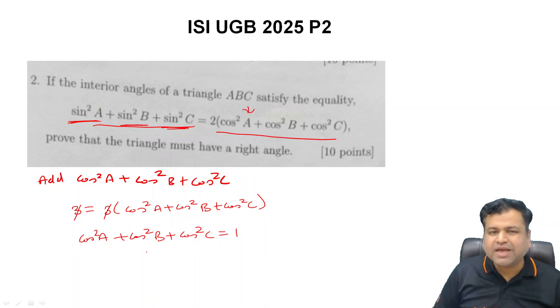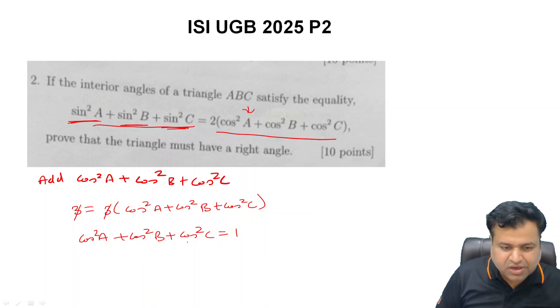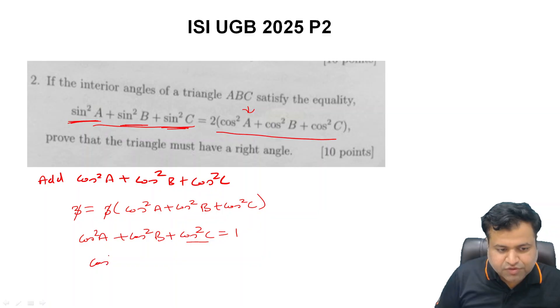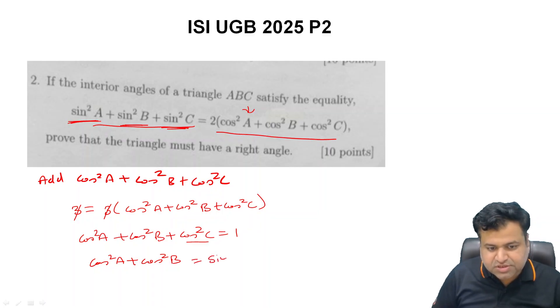Now let us take cos²C to the right-hand side. We can say that cos²A + cos²B = 1 - cos²C, which is sin²C.